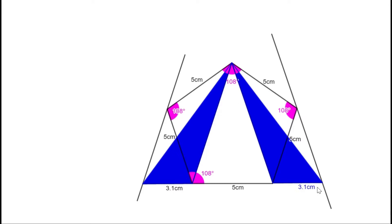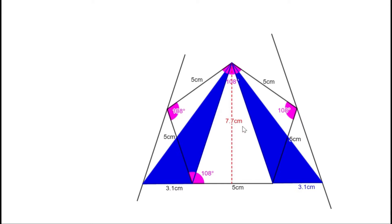To find the area of a triangle, we need base and height. Here, this is the base. The base measures: 3.1 cm, plus 5 cm, plus 3.1 cm again, so 3.1 plus 3.1 is 6.2, plus 5 is 11.2 cm. So the base is 11.2 cm. The height is the perpendicular distance from the top vertex to this side. Drawing and measuring it, it is approximately 7.7 cm.